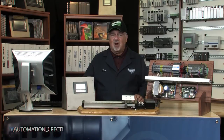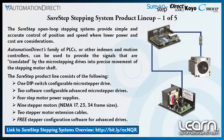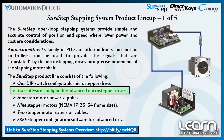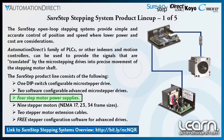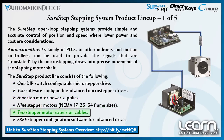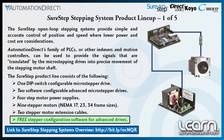It may be helpful to cover the SureStep stepping system product family. The SureStep open loop stepping systems provide simple and accurate control of position and speed where lower power and cost are considerations. The current product lineup consists of one dip switch configurable micro stepper drive, two software configurable advanced micro stepper drives, four stepper motor power supplies, nine stepper motors, and two stepper motor extension cables, along with free stepper configuration software used with the advanced drives. Keep an eye open for additional components to be added to the SureStep product line in the near future.